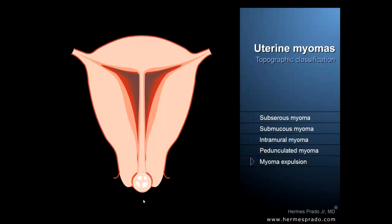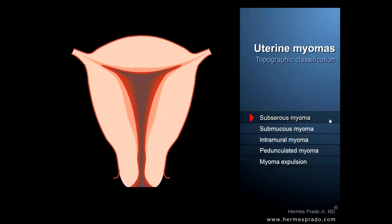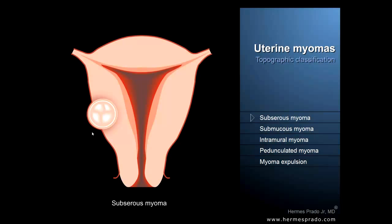Now let's talk about some symptoms of the woman with uterine fibroids. All of these tumors may cause some degree of abdominal discomfort. In the case of a subserous tumor, if it grows towards the bladder wall, it can cause urinary symptoms such as pain, increased frequency of urination, and infections.